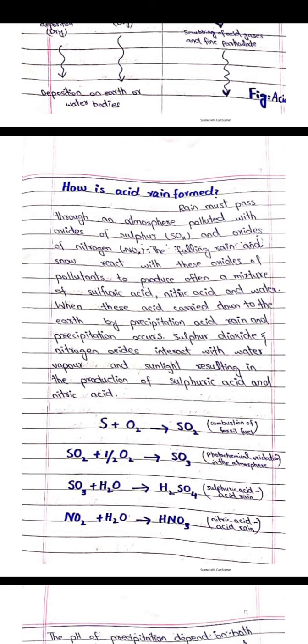We have some reactions to discuss the phenomena of acid formation. Sulfur reacts with atmospheric oxygen to form sulfur dioxide through combustion of fossil fuels. Sulfur dioxide reacts with half a molecule of oxygen to form sulfur trioxide, which is a photochemical oxidant in the atmosphere. Sulfur trioxide then reacts with atmospheric water or moisture to form sulfuric acid as acid rain. Nitrogen dioxide reacts with water to form nitric acid as acid rain.